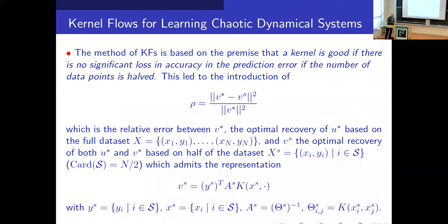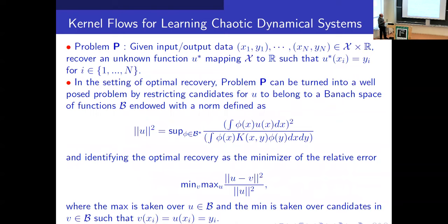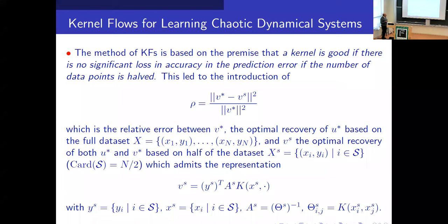The question here is: given input-output data we would like to recover an unknown function u* such that u*(x_i) = y_i. In the setting of optimal recovery, the problem can be turned into a well-posed problem by restricting candidates for u* into particular kinds of Banach spaces with the following norm. The optimal recovery problem in that case is given by this minimax problem.